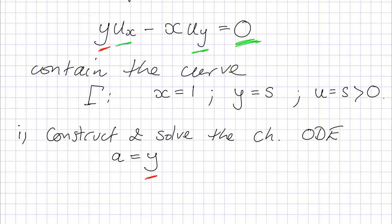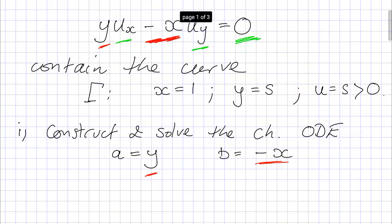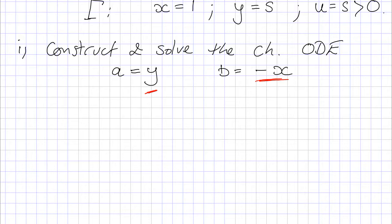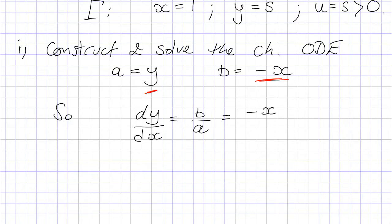Whatever is in front of du/dy we call b — and let's not forget the minus sign — so b is equal to minus x. Once we've identified these two coefficients we can simply write down the characteristic ODE: dy/dx equals b over a, and in our particular case that's minus x over y.